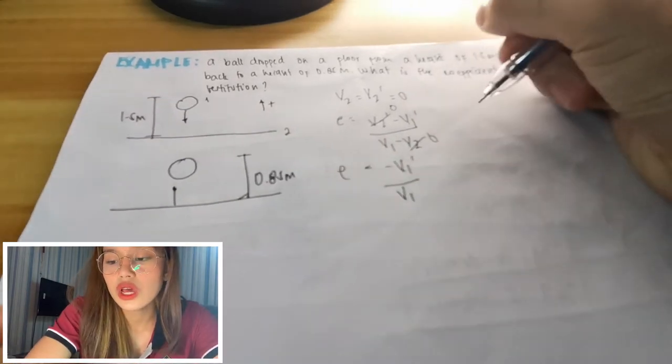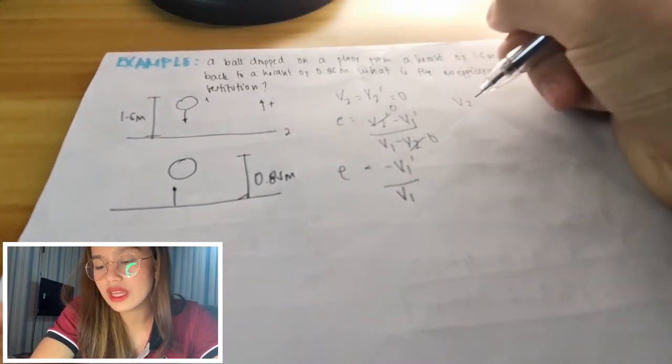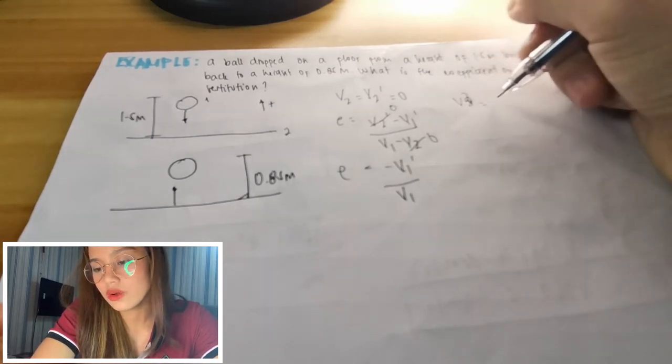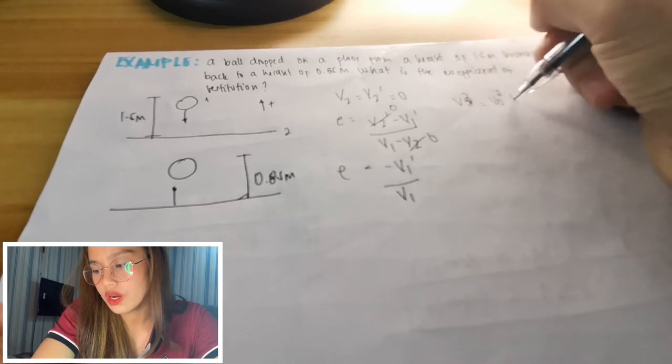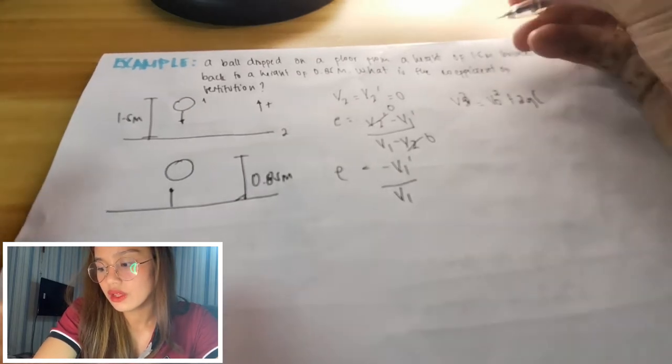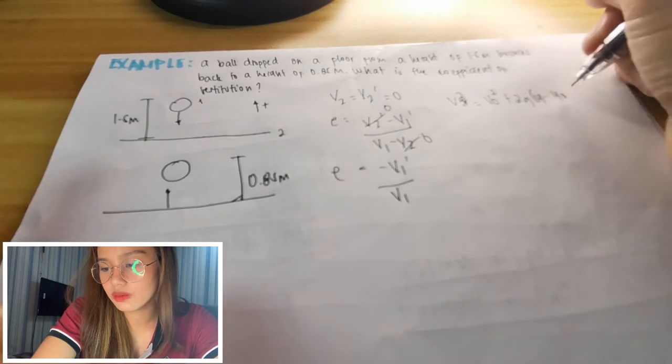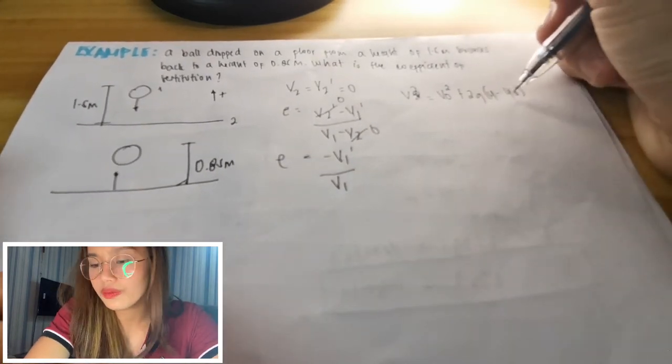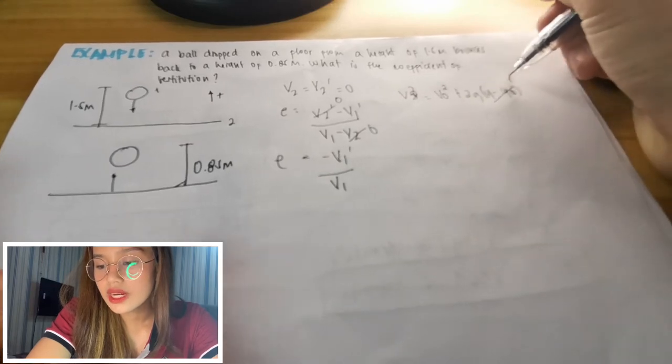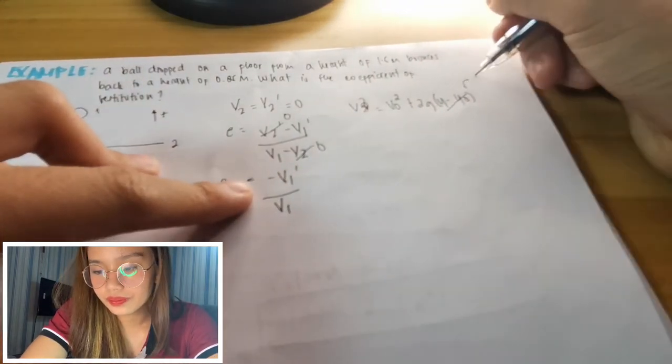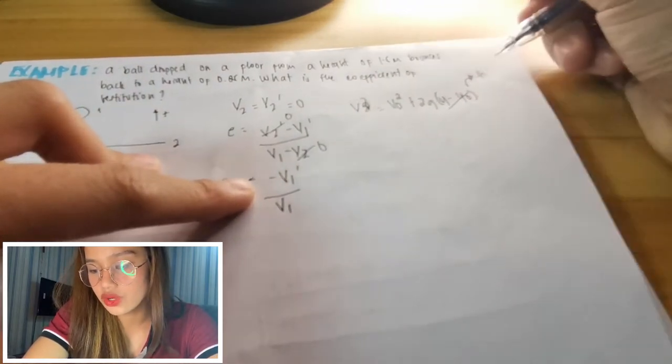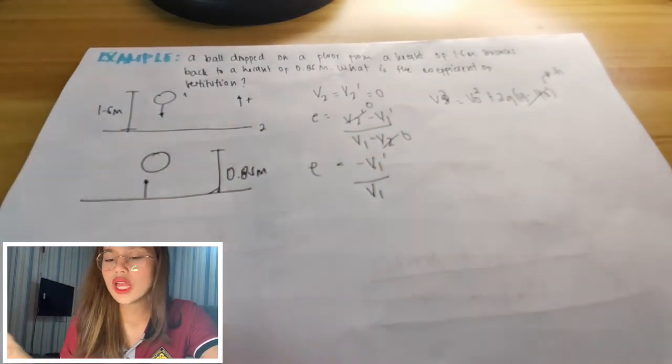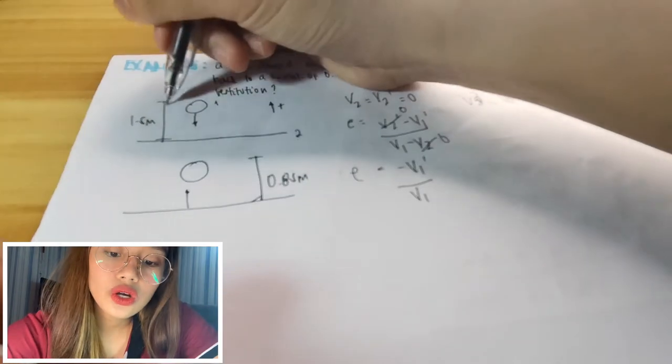So we'll use the formula from kinematics where v squared is equal to v₀ squared plus 2g times y minus y₀. So this y₀, or these y values, we can make them h or the height. So now, since here, coming from here,